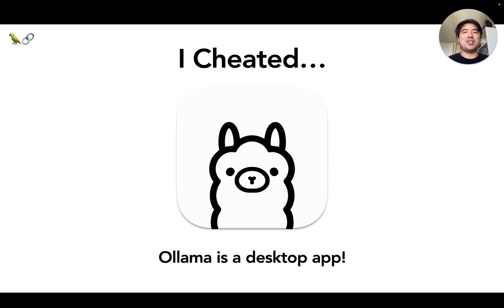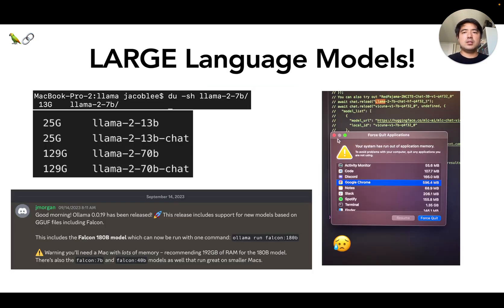I do have a slight confession to make, however, and it's one that underscores some of the current difficulties with building with large language models in the browser. Ollama isn't running in the browser — it's actually a desktop app that runs on my MacBook. Why did I do this? I previously mentioned some of the cool efforts from the Machine Learning Compilation team to run LLMs directly in the browser. But the fact is, large language models are large, and techniques and new developments are coming out almost monthly at this point.